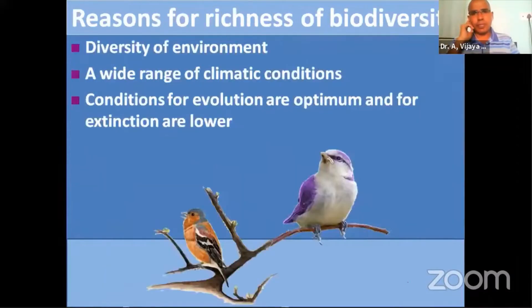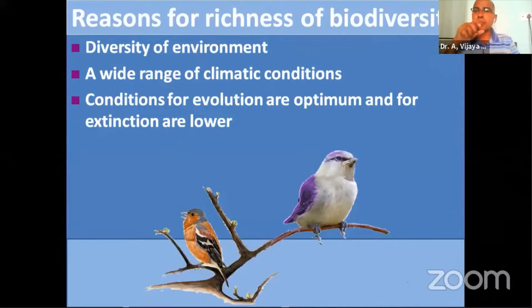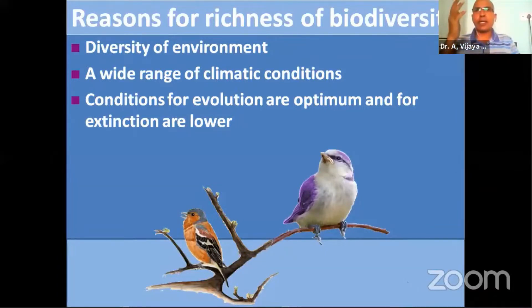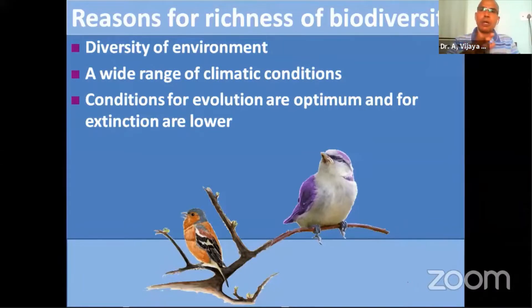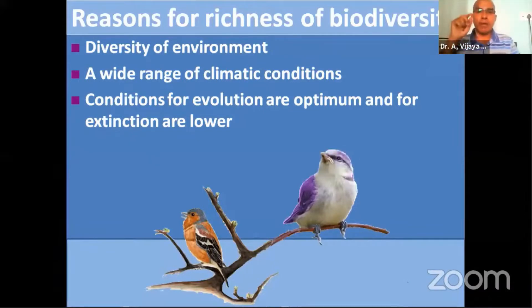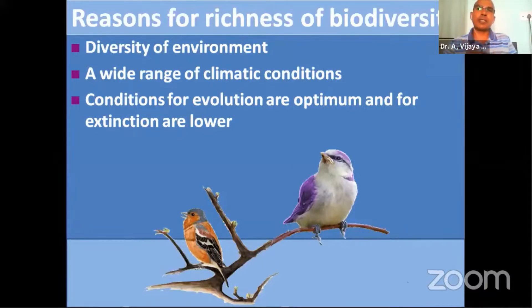Why is there such richness of biodiversity in particular localities? The diversity of environmental factors always has a tremendous impact on species. Climatic conditions can either favor or harm species. In these areas, environmental factors are good and supportive, so richness is high. A wide range of climatic conditions helps plant species adapt. Conditions for evolution are optimum and extinction rates are lower, so new species and varieties continuously emerge.